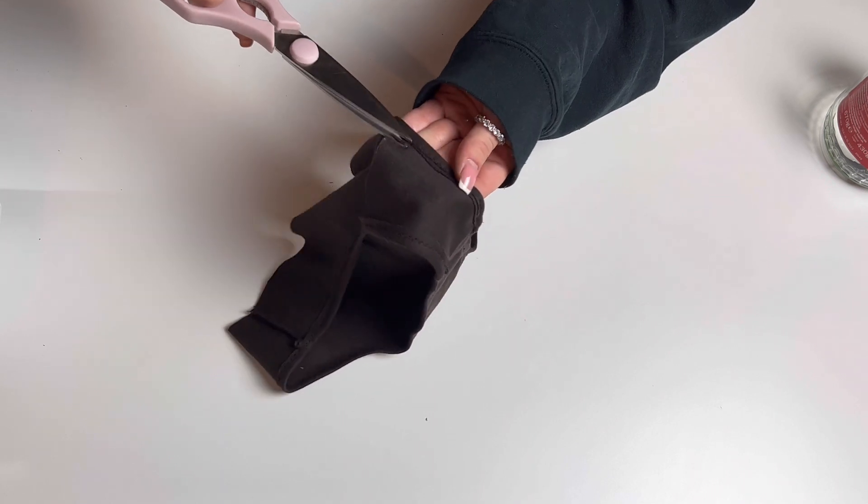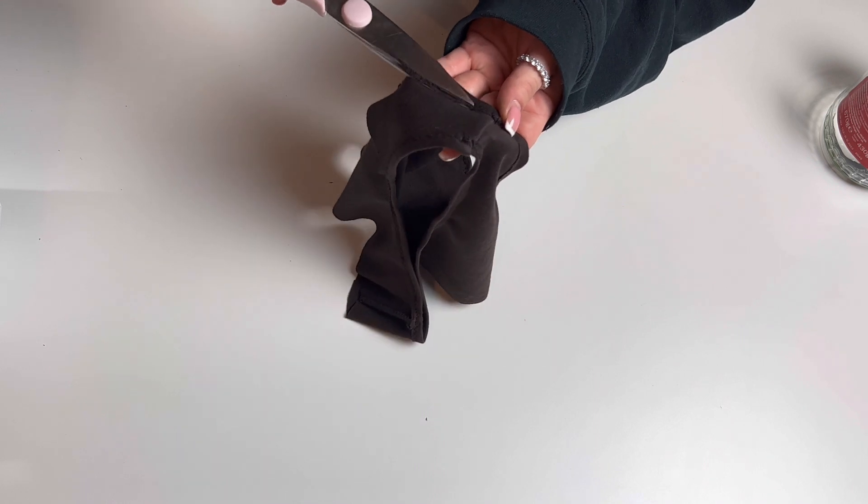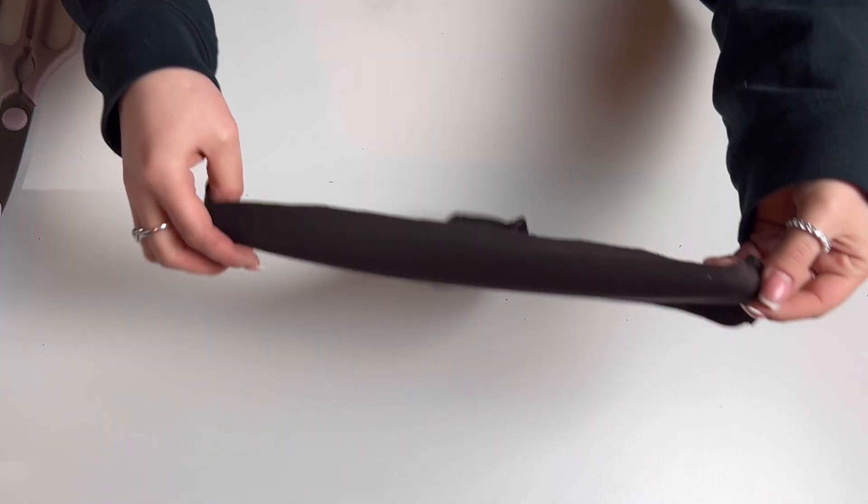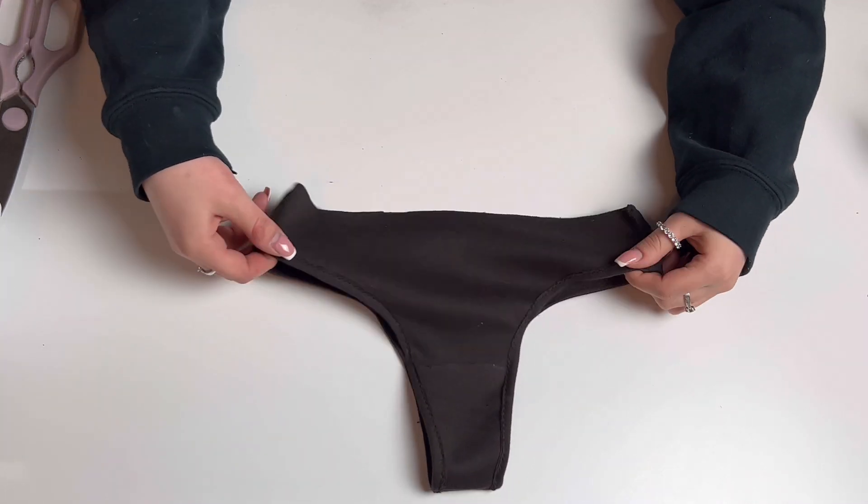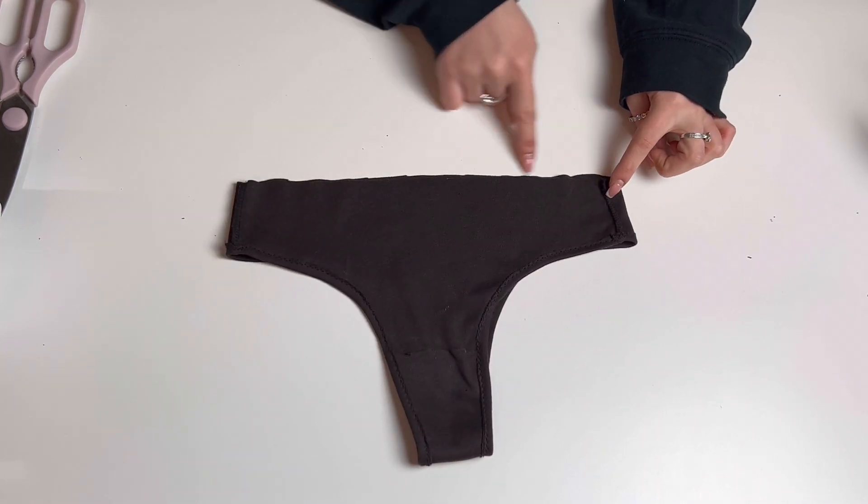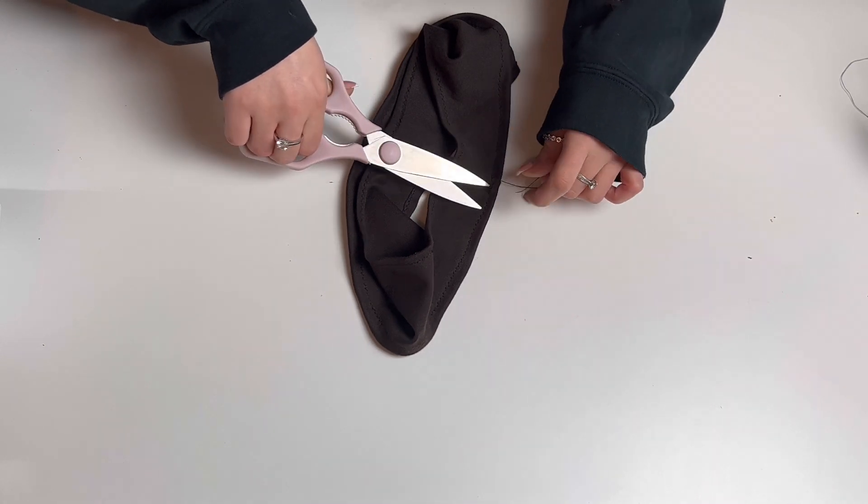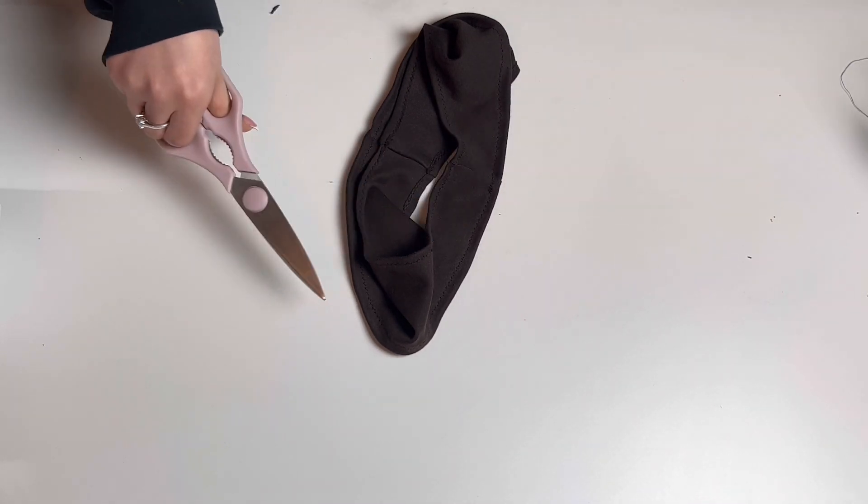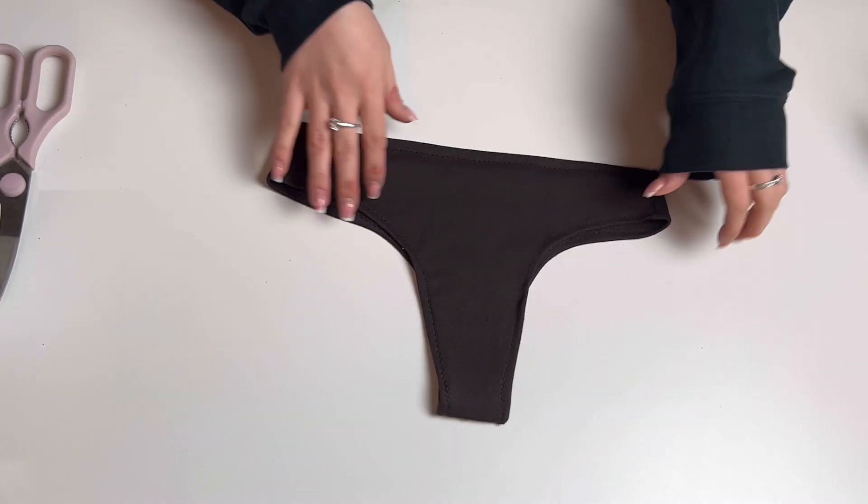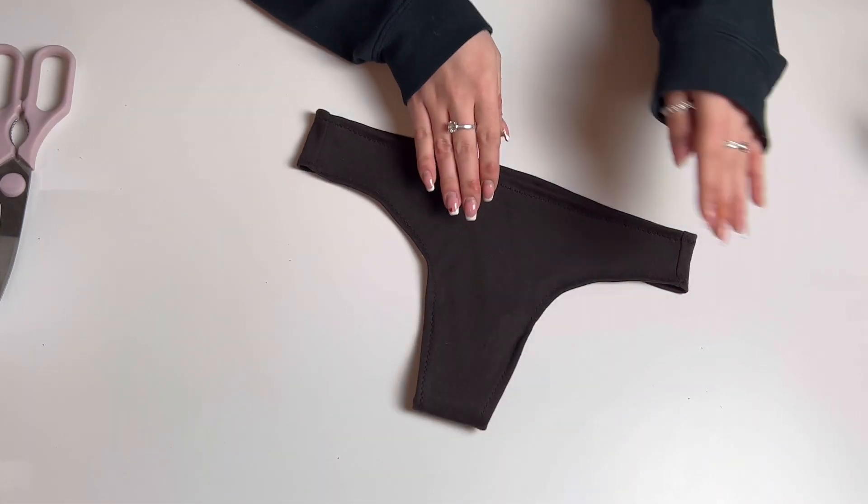Cut off any raw edges that you need to and fold over the top of your pants and sew that down as well. Cut off any loose threads from your garments. And just like that you have made your very own pattern and underwear set from scratch. And this is the part where you give yourself a pat on the back for all of your hard work.